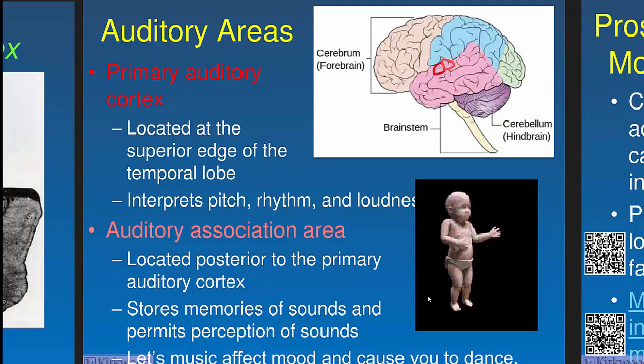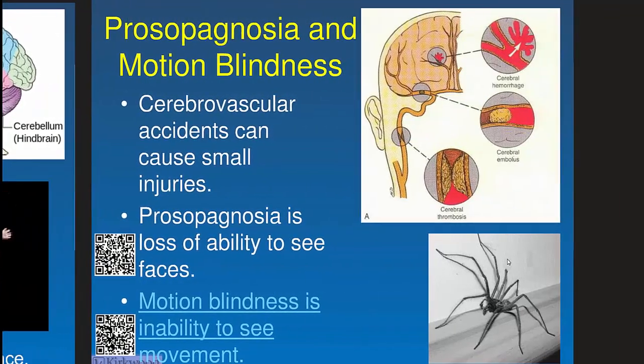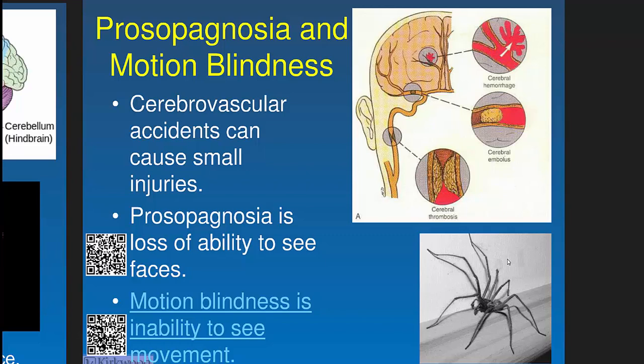Primary auditory cortex is responsible for pitch, rhythm, and loudness — the first interpretation of sound. Auditory association cortex stores memories of sounds, permits perception of sounds, contributes to mood, and might even cause you to dance. Primary auditory just hears; auditory association puts it all together into an overall mood or perception of the sound.